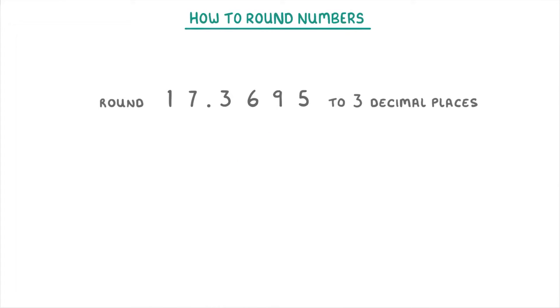In this last question, we're rounding 17.3695 to 3 decimal places. So this time, the 9 would be our last digit, because it's three places to the right of the decimal point. And the decider would be the 5, because that's the next digit to the right.